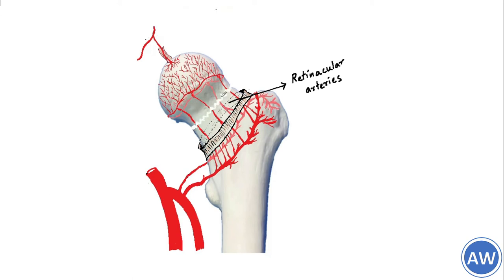Whenever a fracture occurs at the neck of the femur, the retinacular fibers of the capsule along with the retinacular arteries are torn. Thus, the blood supply to the head of the femur is interrupted.